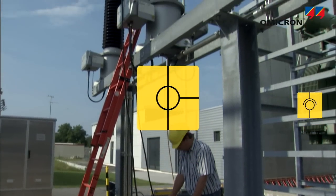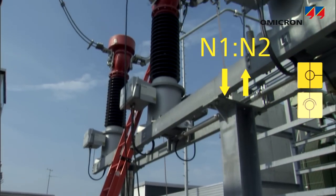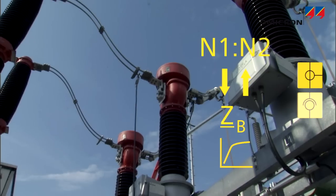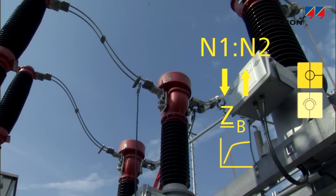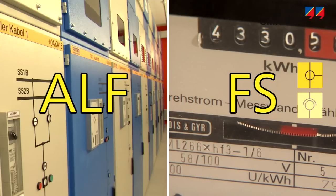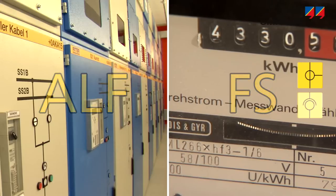On current transformers, usually the ratio and polarity are verified and burden and excitation curve are measured. The accuracy limiting factor, or instrument security factor, is calculated from these values to ensure that the CT will perform properly in protection or metering applications.